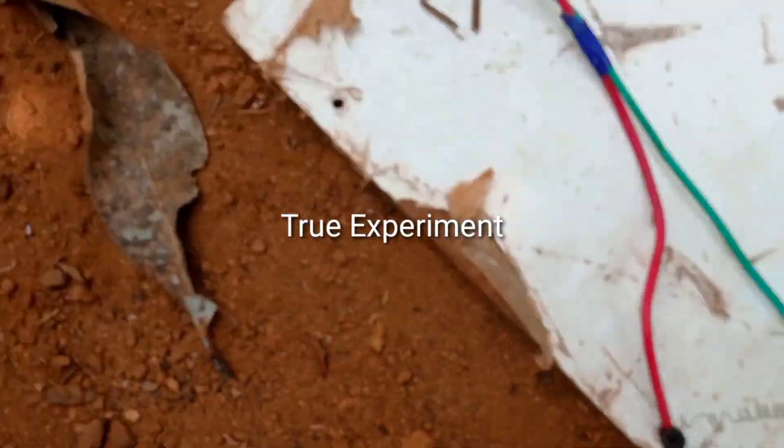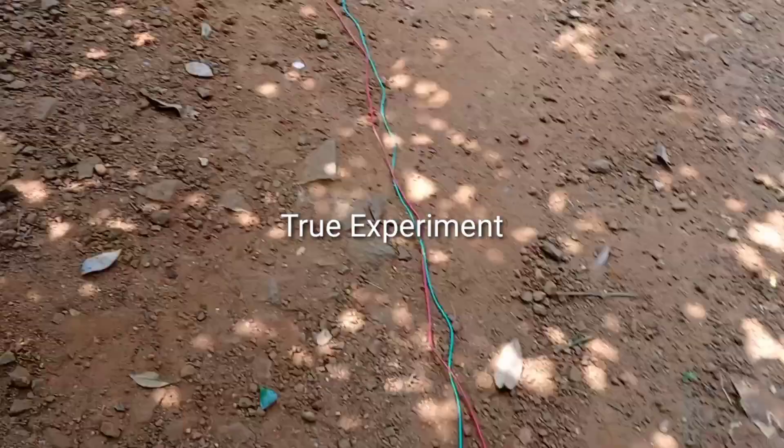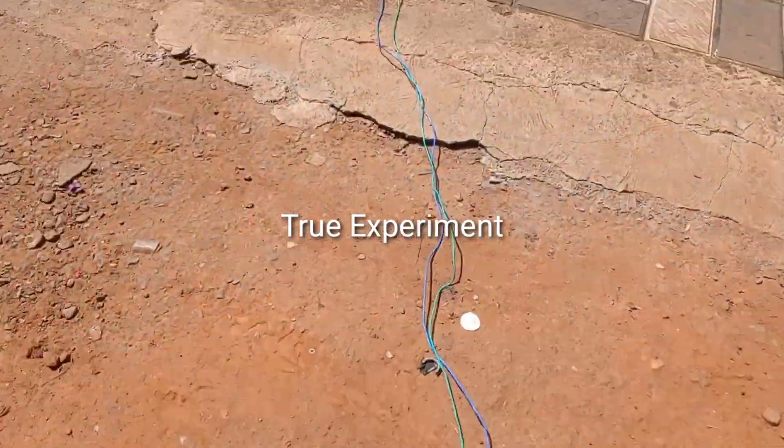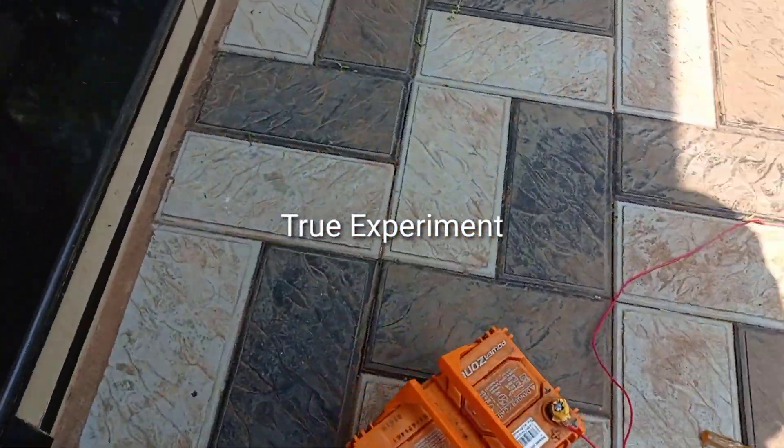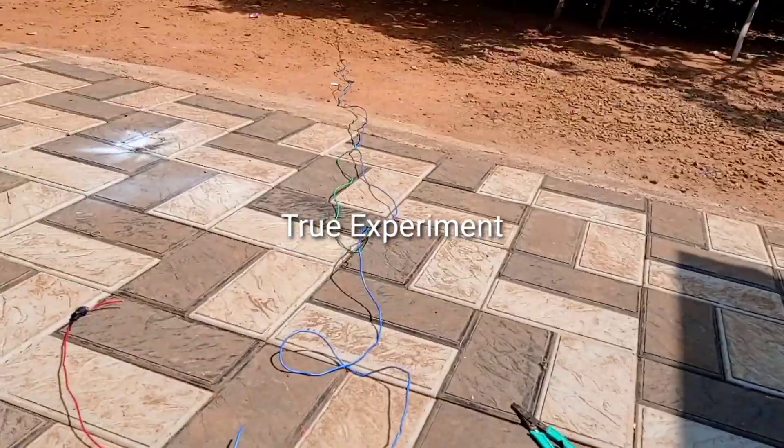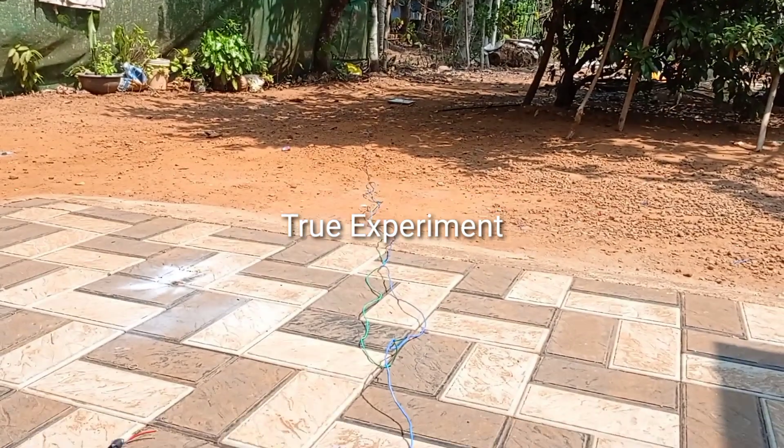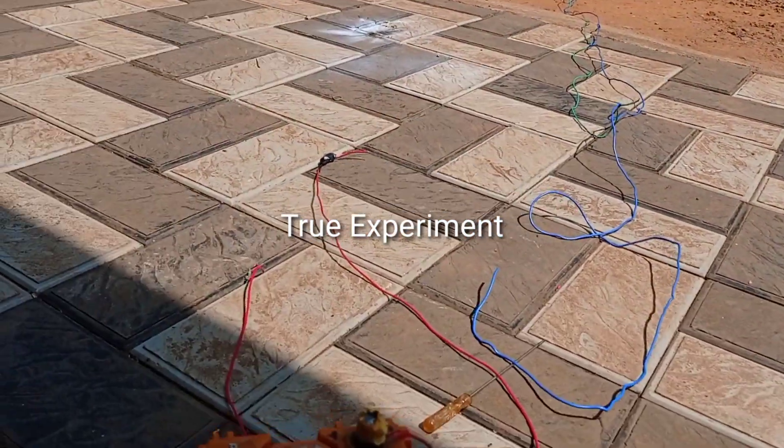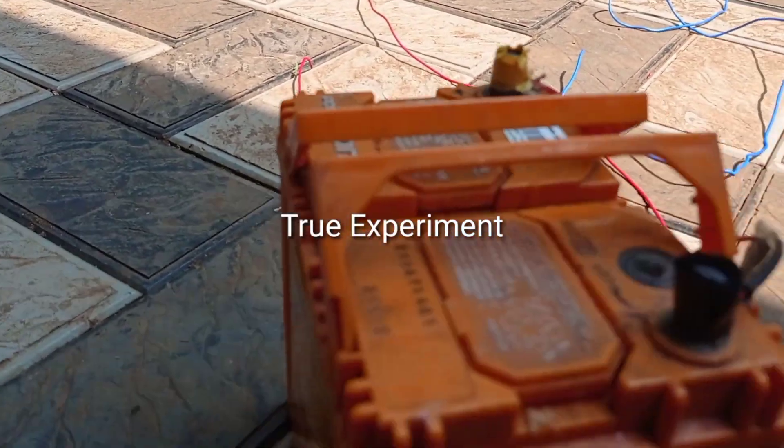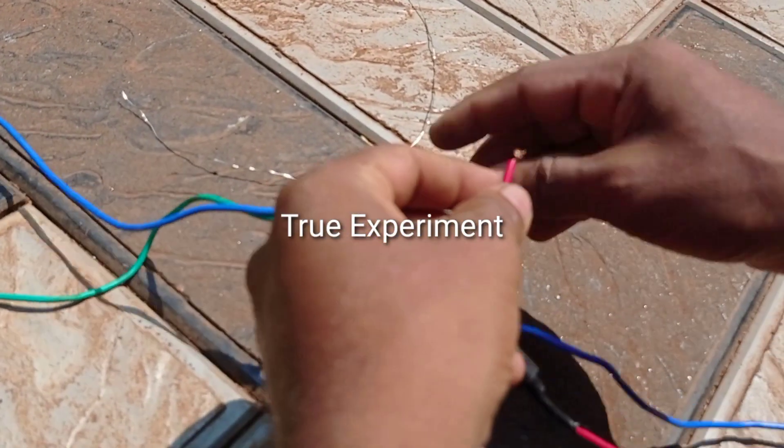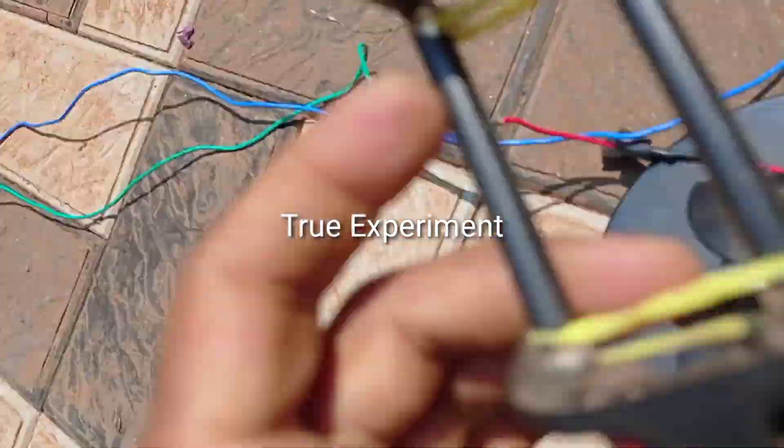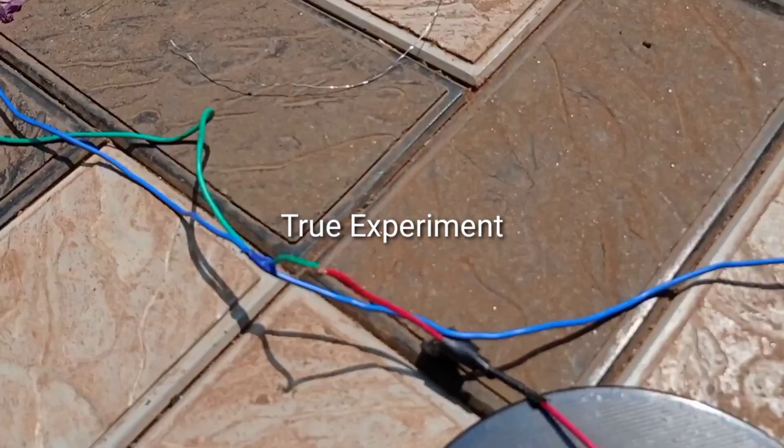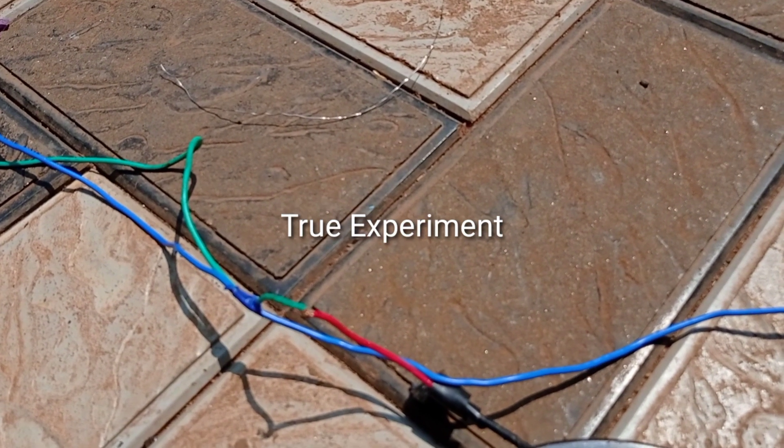So we put 1.5 mm wire. We have to get a safety unit. We have to get a new battery. We have two batteries. The battery has a negative terminal.